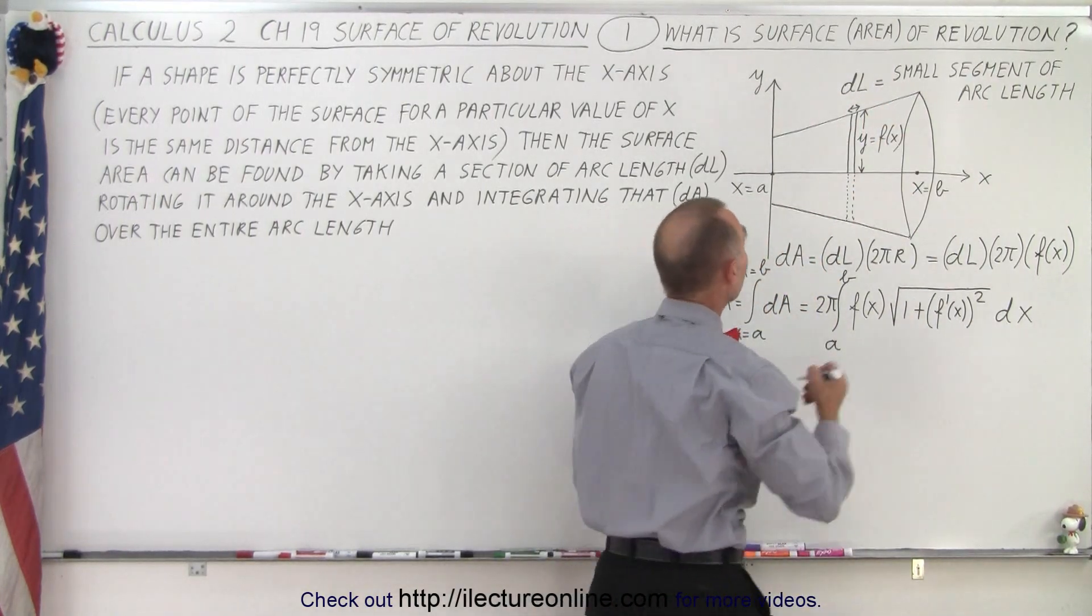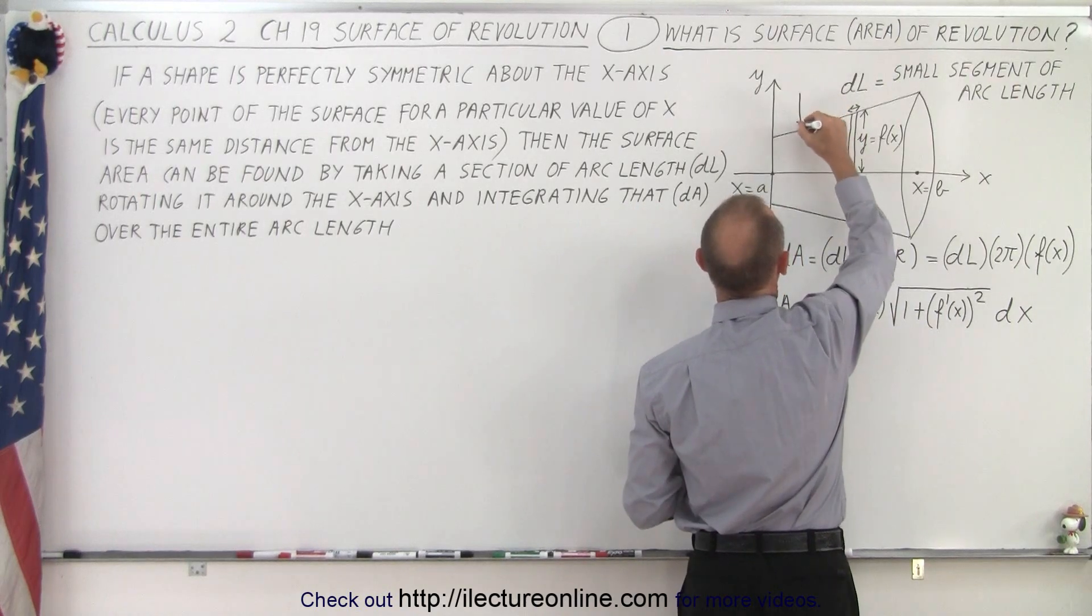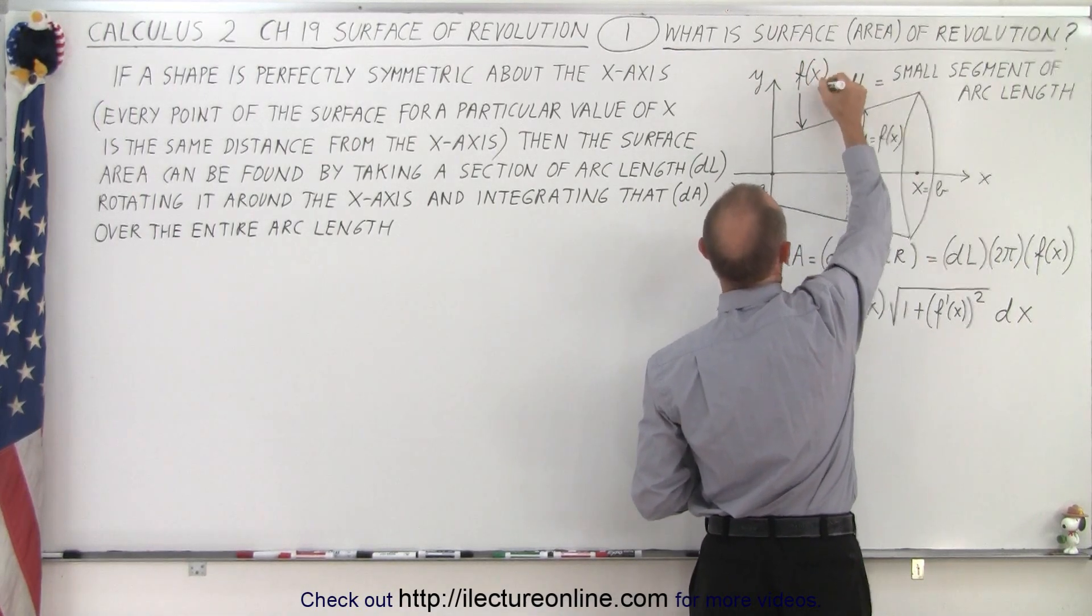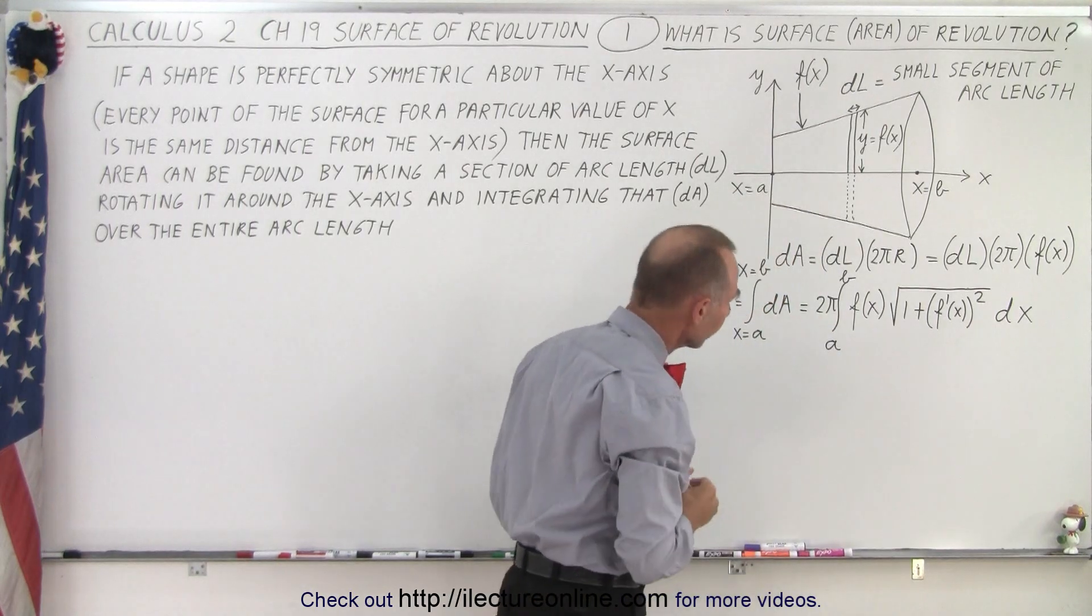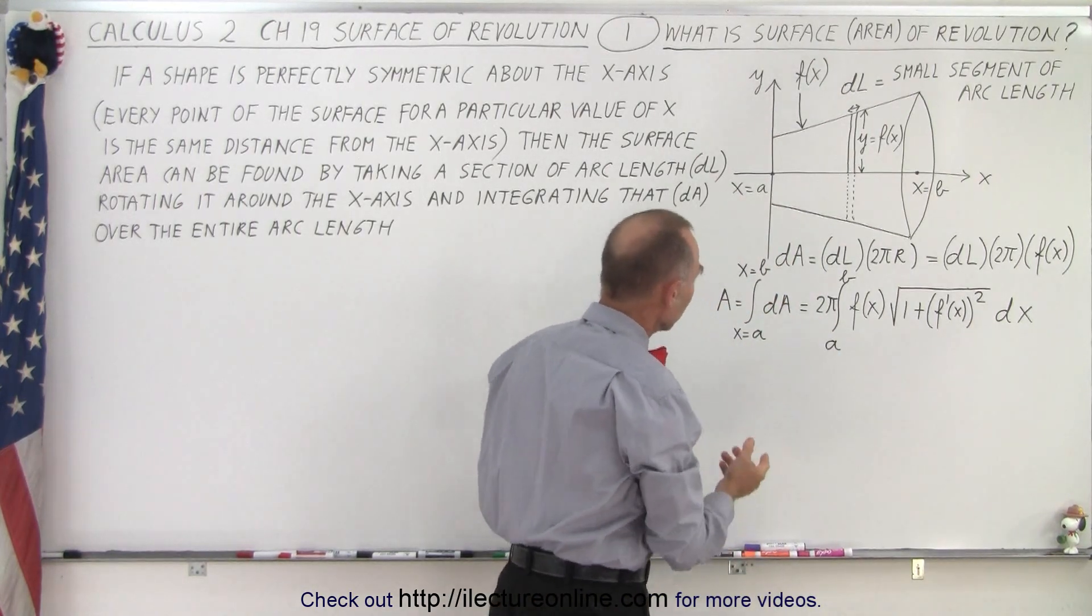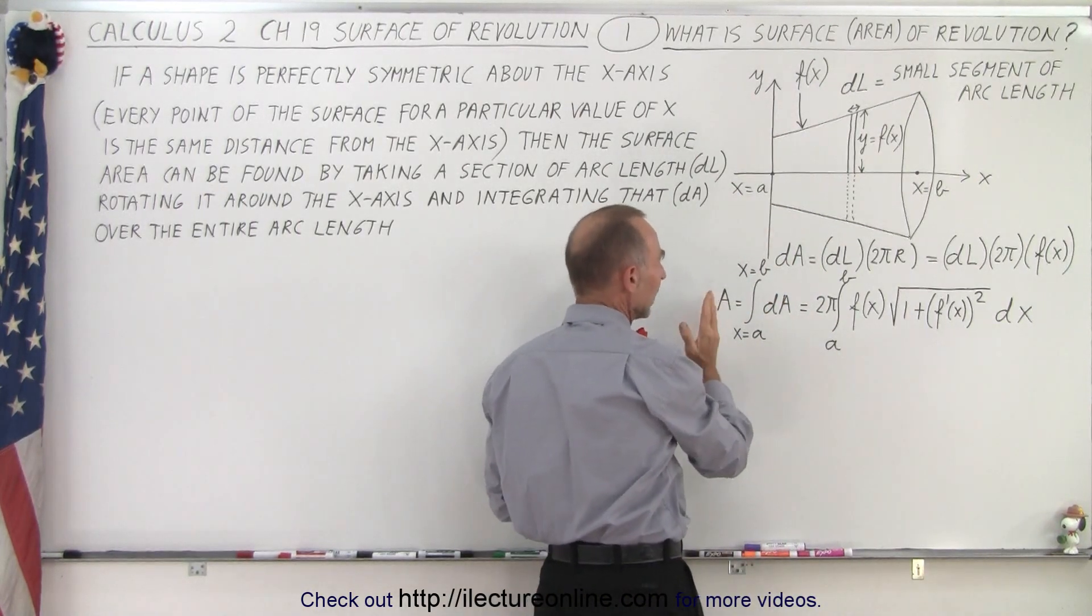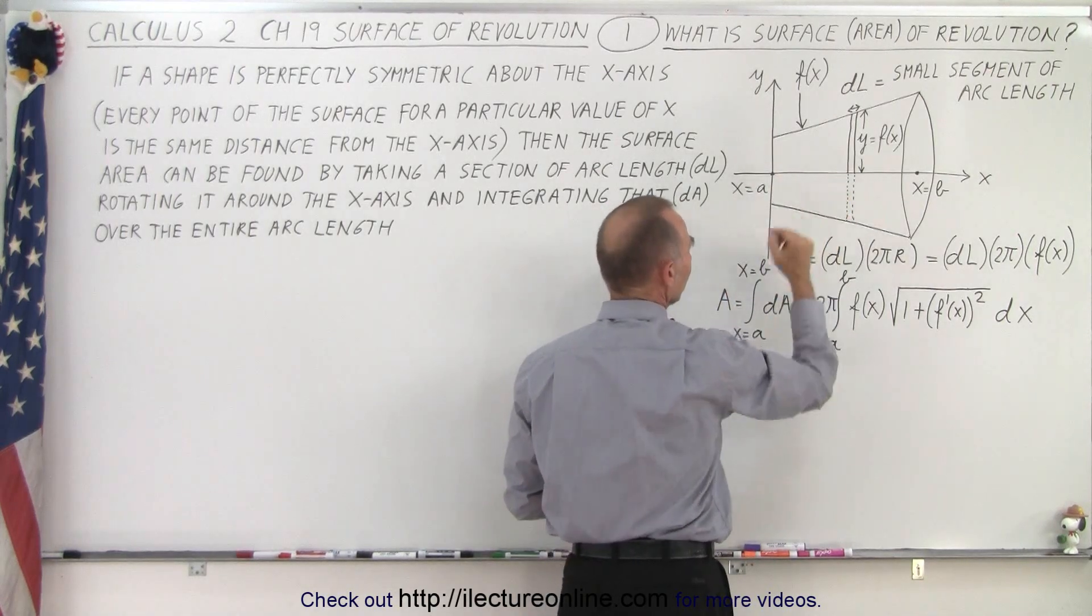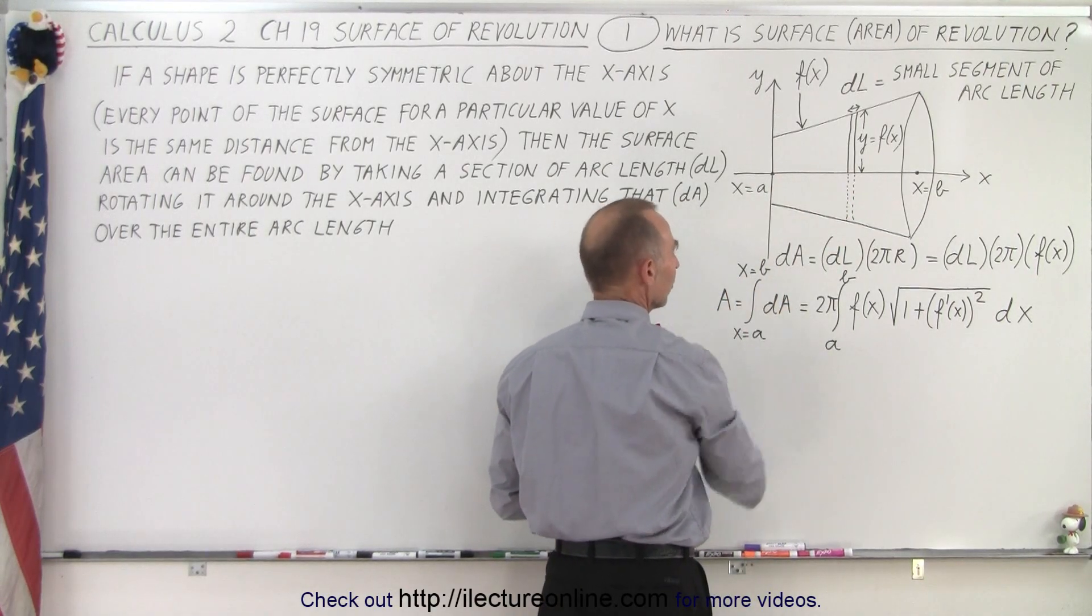Simply, what we need to do is figure out what this function of x is on the surface of that revolution. To get the total area, we're going to integrate all those little segments, all the little dAs from x equals a to x equals b.